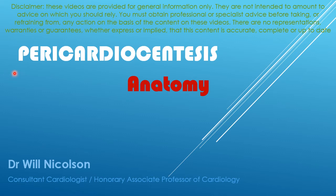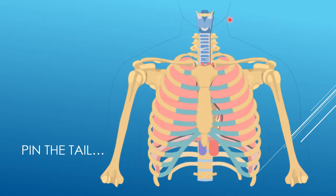Now we'll talk through the anatomy important to the pericardiocentesis procedure. Take a moment to think about where you would approach pericardiocentesis from the different available options. We could go subcostally, apically, or parasternally.